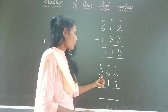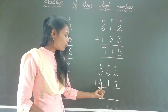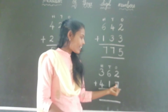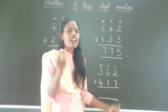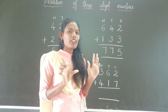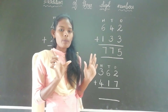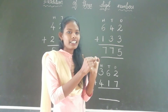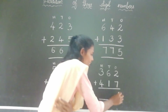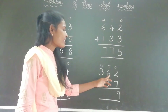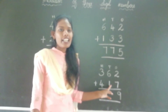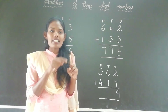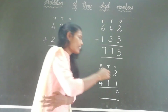Next, see this problem: 362 plus 417. Here what is the ones place? 2 and 7 — these numbers are at the ones place. Keep 2 in your mind and take 7 fingers. What comes after 2? 3, 4, 5, 6, 7, 8, 9. The answer is 9. Here 6 and 1 — these numbers are at the tens place. Keep 6 in your mind and take 1 finger. What comes after 6? 7. The answer is 7.